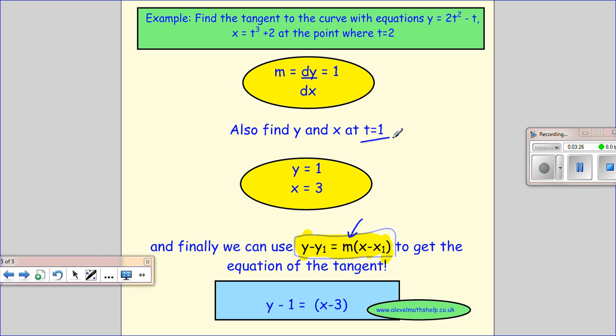So to get our point, what we do is substitute t equals 1 into our original equations for x and y. So I go back for y. So I've got 2 times 1 squared minus 1. So that gives me 1. And 1 cubed plus 2 gives me 3. And then I just slot it back into the equation. I could, of course, have changed that to be y equals something, but I don't need to. That's fine. I hope that's helpful.